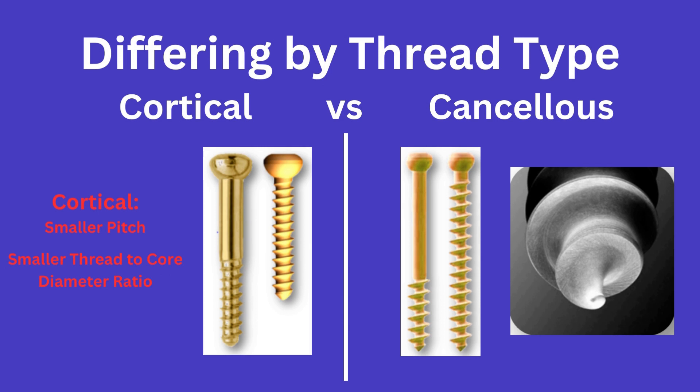With cortical screws, the pitch will typically be smaller and the thread diameter will be closer to that of the core diameter. With cancellous screws, the threads are more prominent for a larger surface area and thus a greater purchase on the bone being drilled into. Also, cancellous screws will typically have a tapering spiral tip to push the spongy cancellous bone aside to thread its way through.